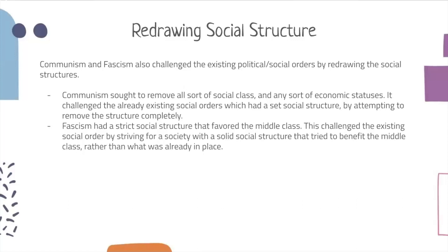Redrawing social structure. Communism and fascism also challenged the pre-existing political and social orders by redrawing social structures. Communism sought to remove all social classes and economic statuses, challenging the already existing social orders by attempting to remove them from the structure completely. Fascism had a strict social structure that favored the middle class, challenging the existing social order by striving for a society that benefited the middle class rather than what was already in place.